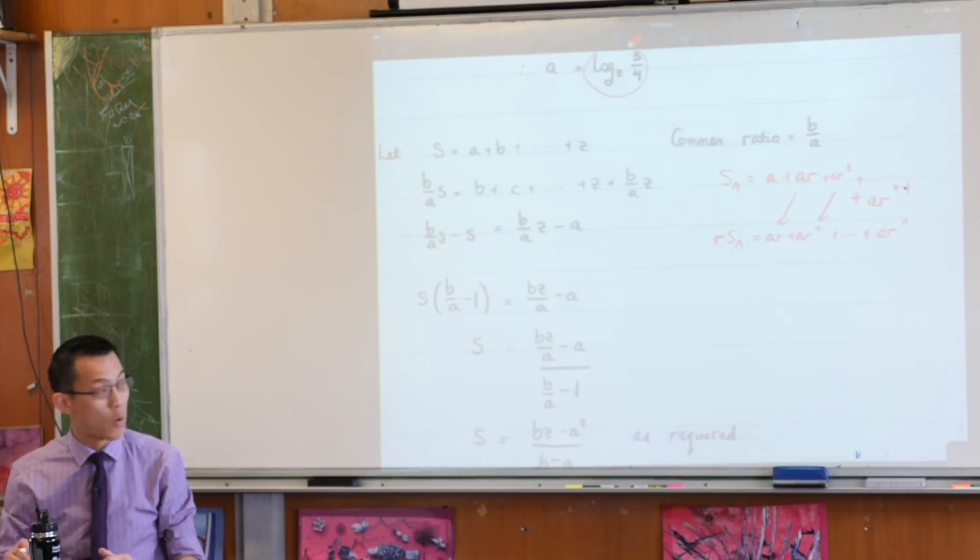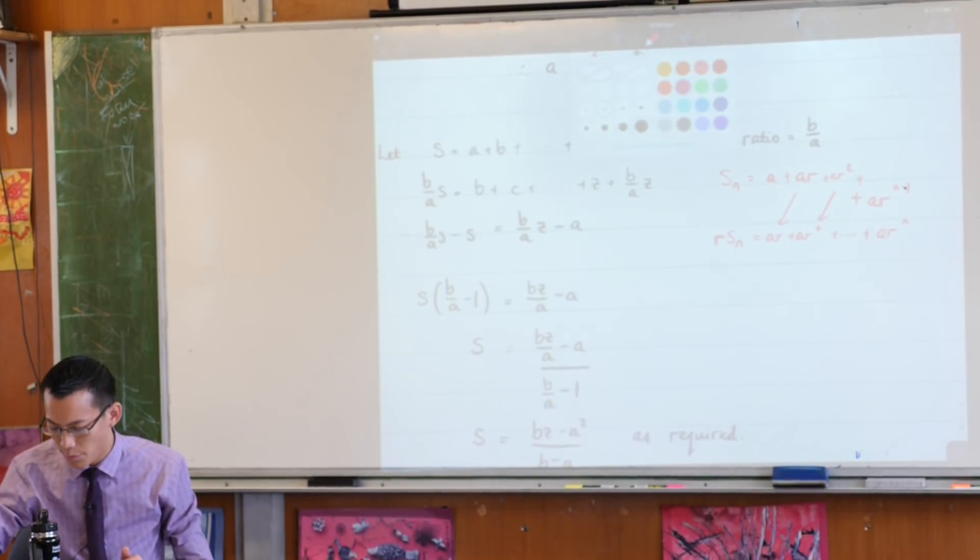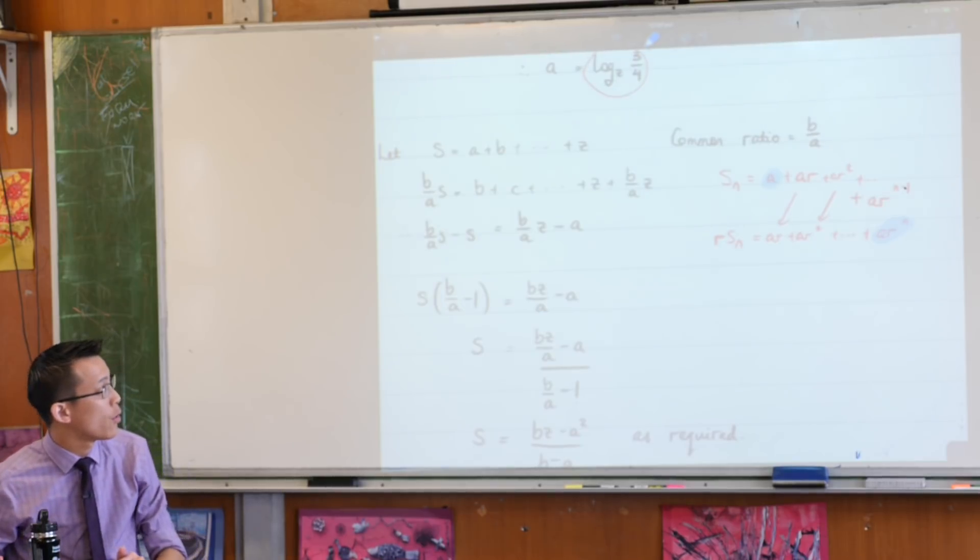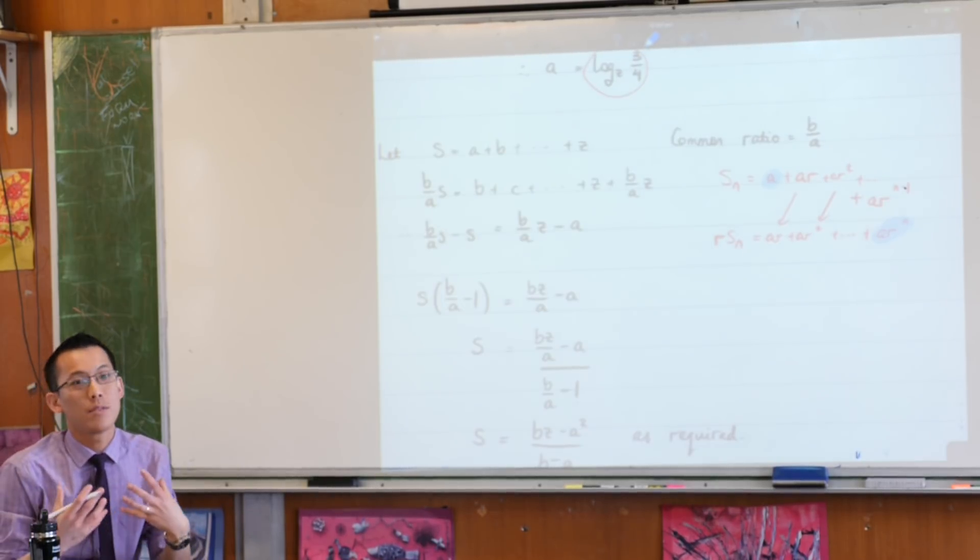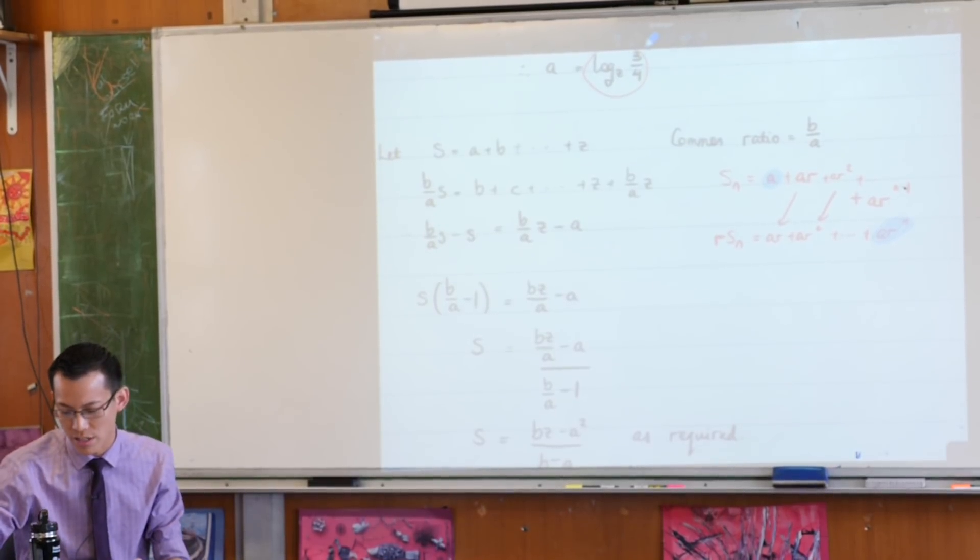Which is why, when you subtract one of these lines from the other, all of the things cancel except for this guy down the end, and this guy at the beginning, do you remember that? So what I've done is that exact same strategy, except in this weird looking, strangely dressed up formula.